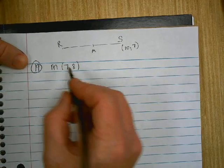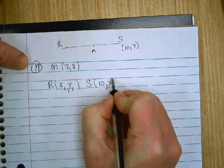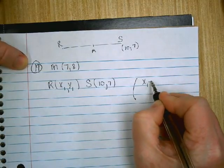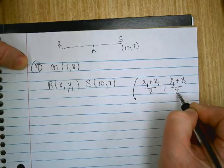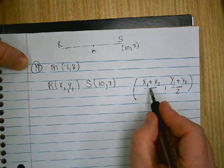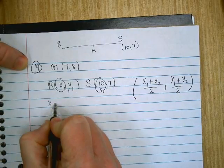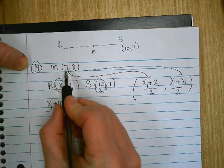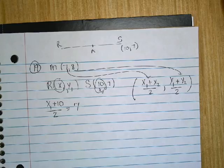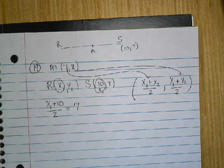So here's what we did. R is located at x sub 1, y sub 1. S is located at (10,7). And we use the midpoint formula. x sub 1 plus x sub 2 over 2, y sub 1 plus y sub 2 over 2. So we're going to take x sub 1 and x sub 2, divide it by 2, and I'm supposed to get 7.